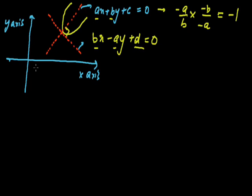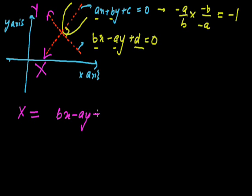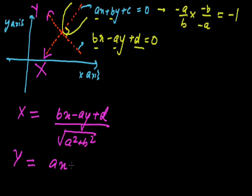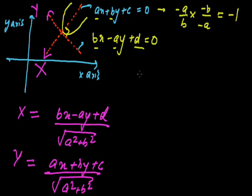To solve problems related to such a random parabola, what you have to do is assume the axis line as your new X-axis (capital X) and the tangent-at-vertex line as your new Y-axis (capital Y). Define X as (Bx minus Ay plus D) divided by the square root of (A squared plus B squared), and Y as (Ax plus By plus C) divided by the square root of (A squared plus B squared). This transforms the random parabola into a standard parabola in the new coordinate system.